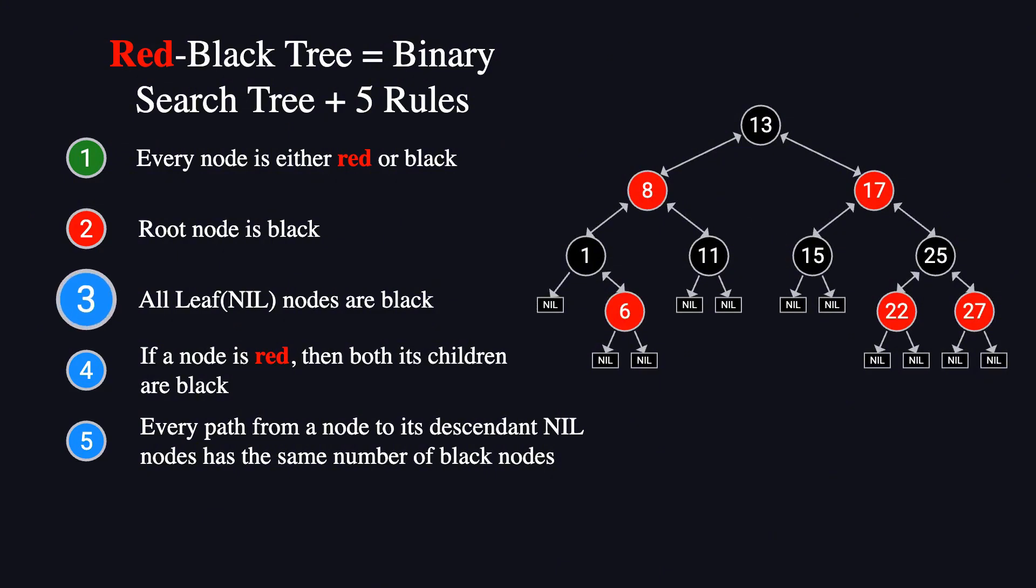Rule three states that all leaf nodes, which are nil nodes, must be black. This rule is never violated because the newly inserted node's children are still nil nodes, and nil nodes are always black. For example,